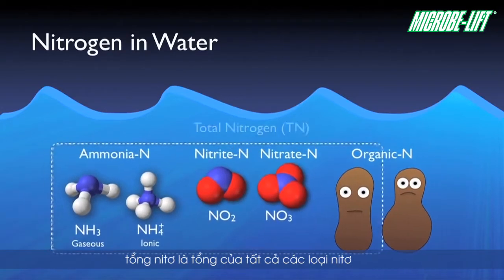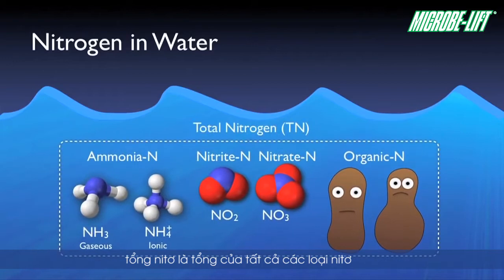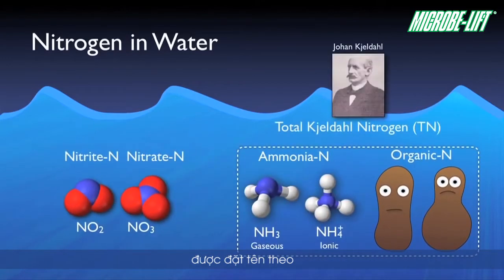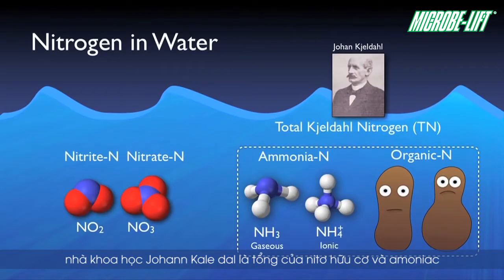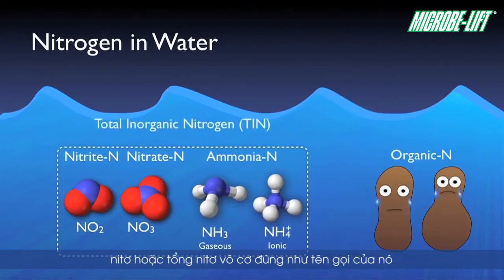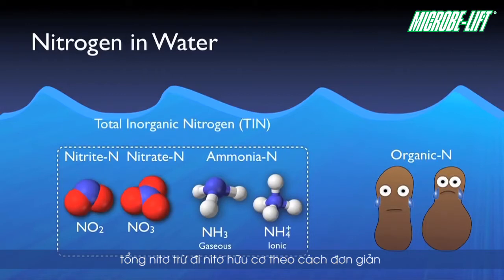Total nitrogen, as the name implies, is the sum of all types of nitrogen. TKN, or total Kjeldahl nitrogen, named after the scientist Johann Kjeldahl, is the sum of only organic nitrogen and ammonia nitrogen. TIN, or total inorganic nitrogen, is just as the name implies — the total nitrogen minus the organic nitrogen.